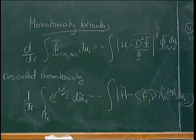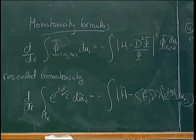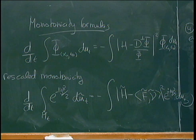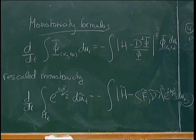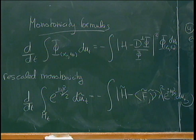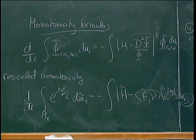Now let me talk a little bit about weak solutions. On the topic of weak solutions to mean curvature flow, the idea is to find a way to continue the flow after the singular time. There have been many approaches, and I'm going to mention four of them today and tell you the advantages and disadvantages of each.